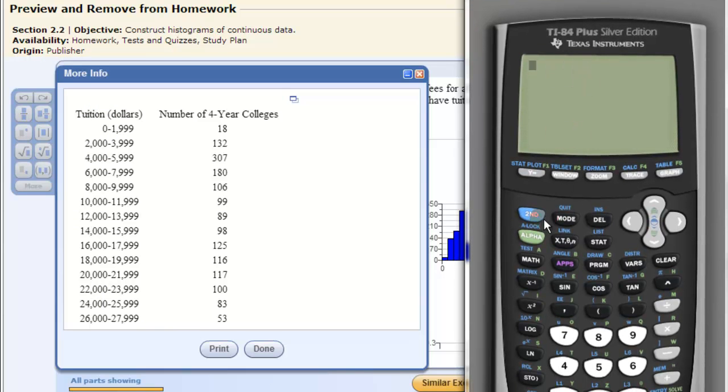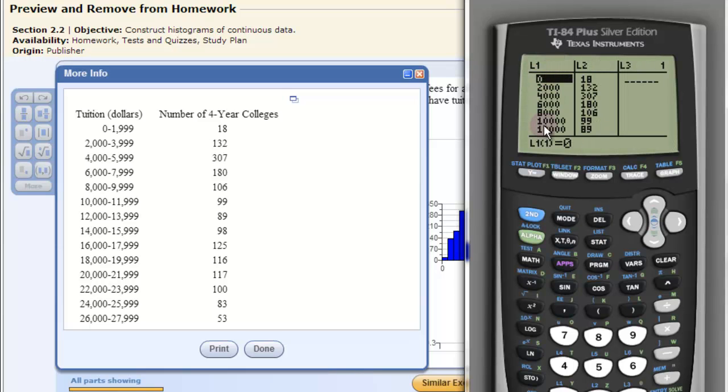So what we do is we go into stat and click edit. This will edit our lists. L1 is the first list and this will be our lower class limits. So zero, two thousand, four thousand, all the way to twenty six thousand.